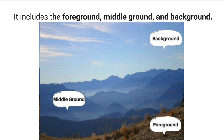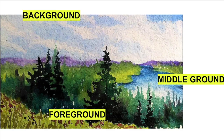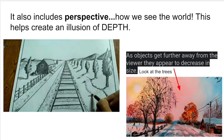Space also includes foreground, middle ground, and background. It also includes perspective. This is how we see the world, and it helps create an illusion of depth.